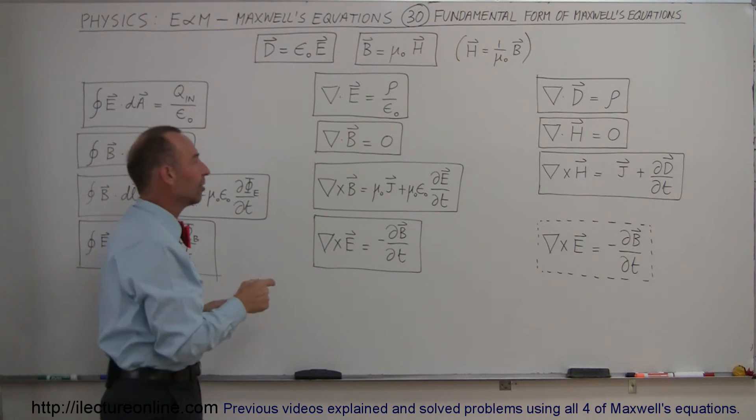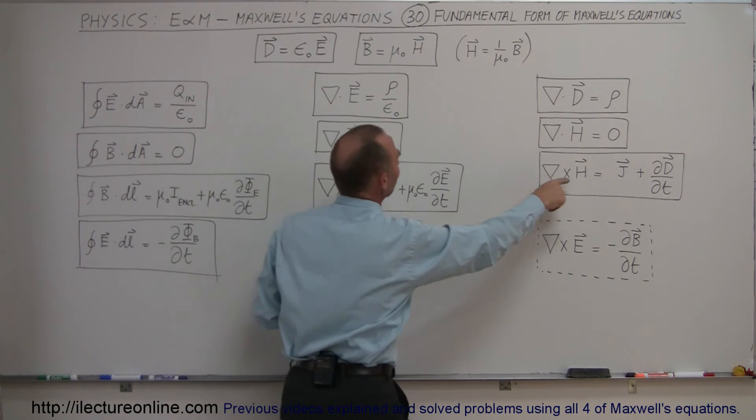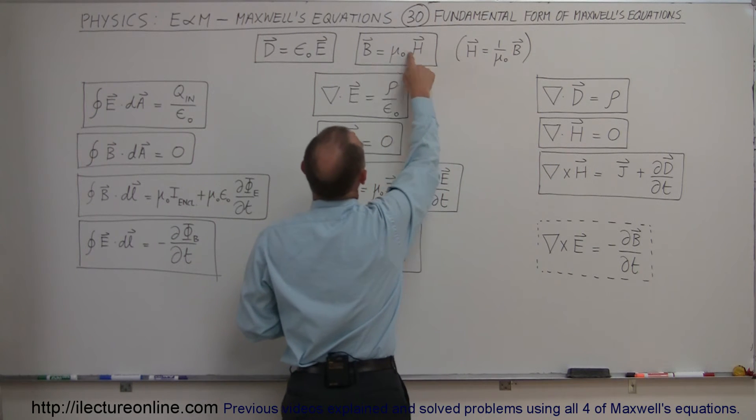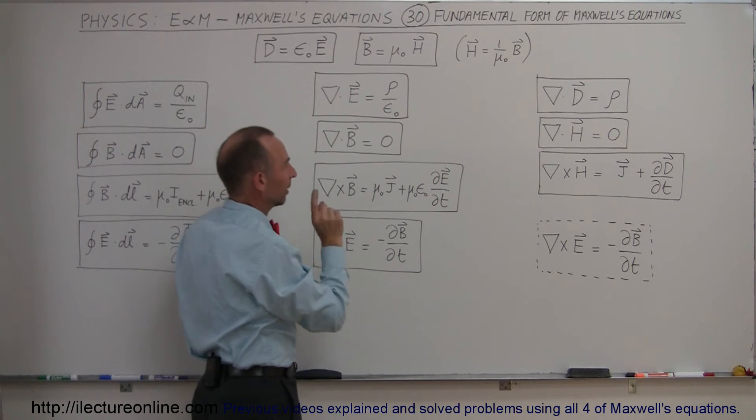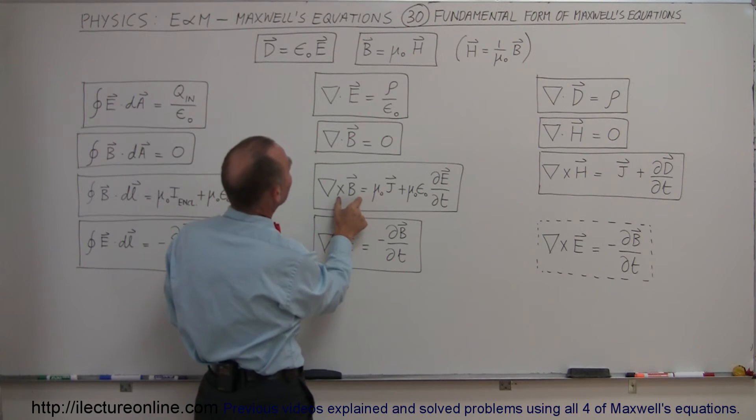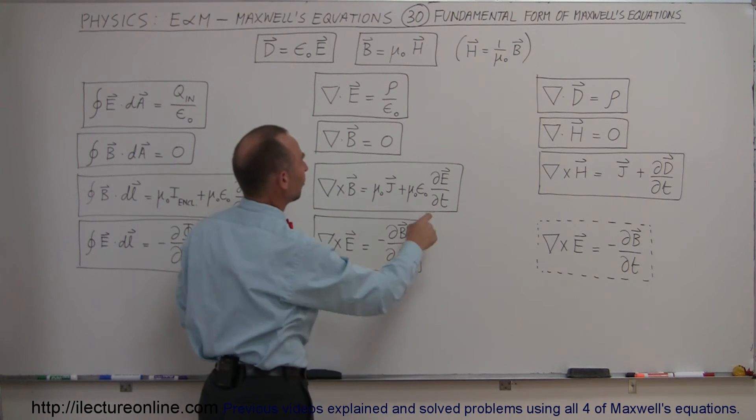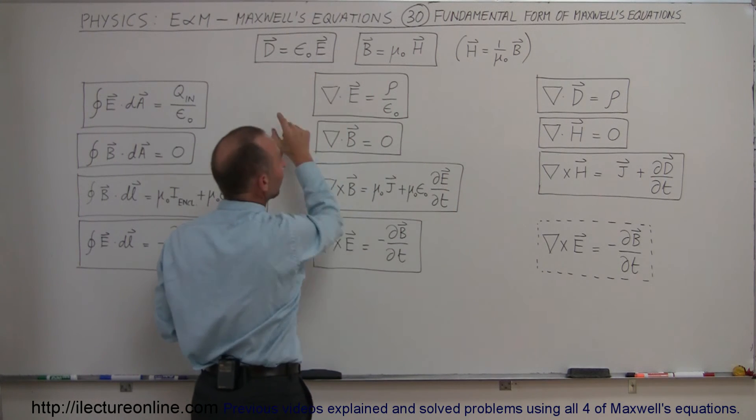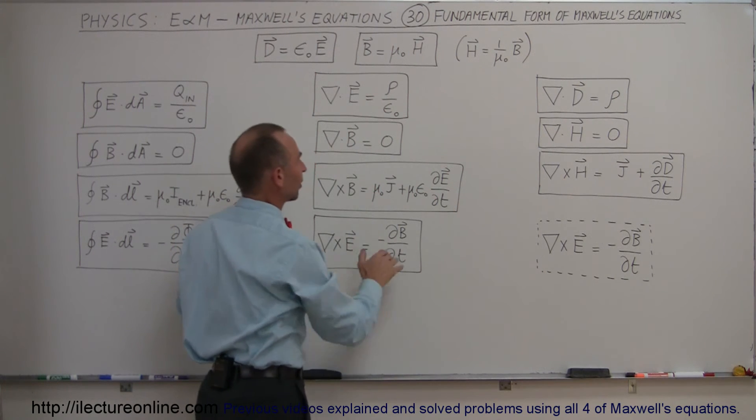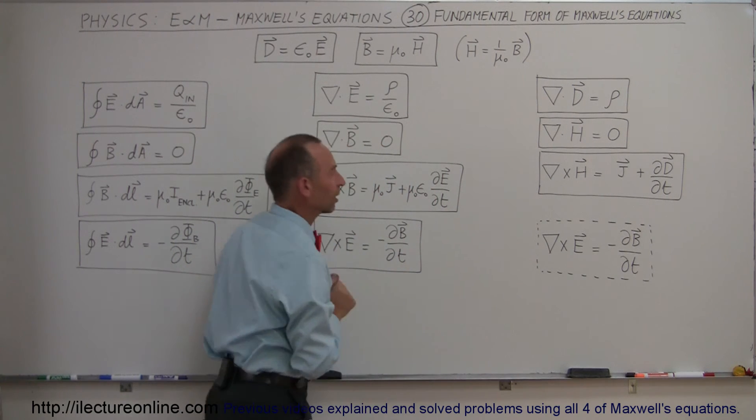The next one is Ampere's law, and here you can see that if you replace the B field by the H field, so H is B divided by mu sub naught, and if you do that, the mu sub naught disappear, and if you replace the E field by the D field, then the epsilon sub naught disappears, and now this equation is exactly the same as that equation, except without these constants right there.